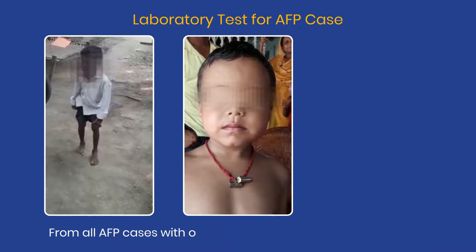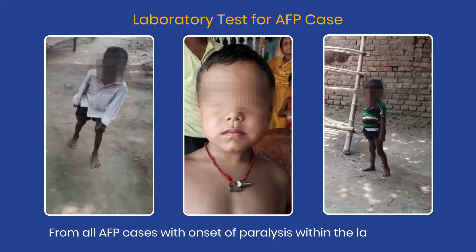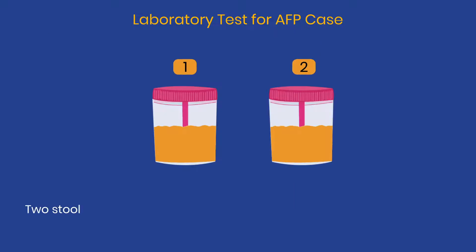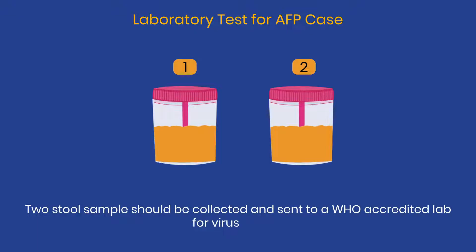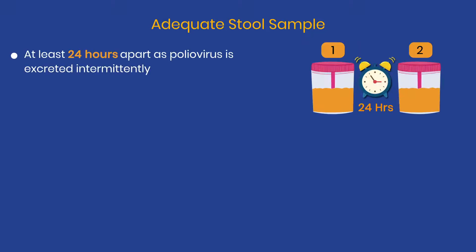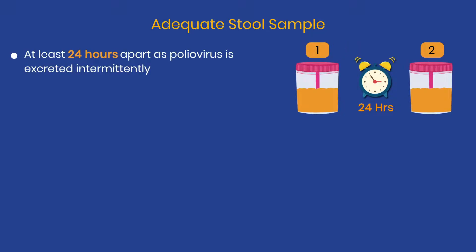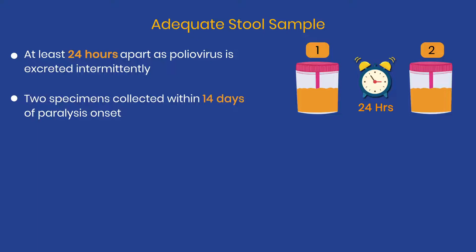From all AFP cases with onset of paralysis within the last 60 days, two stool samples should be collected and sent to a WHO-accredited lab for virus culture. There should be a gap of at least 24 hours between the two samples, in view of intermittent shedding of the virus in the stool. Samples can be collected up to 60 days of paralysis onset, but the chances of polio virus isolation decrease beyond 14 days of onset of paralysis.